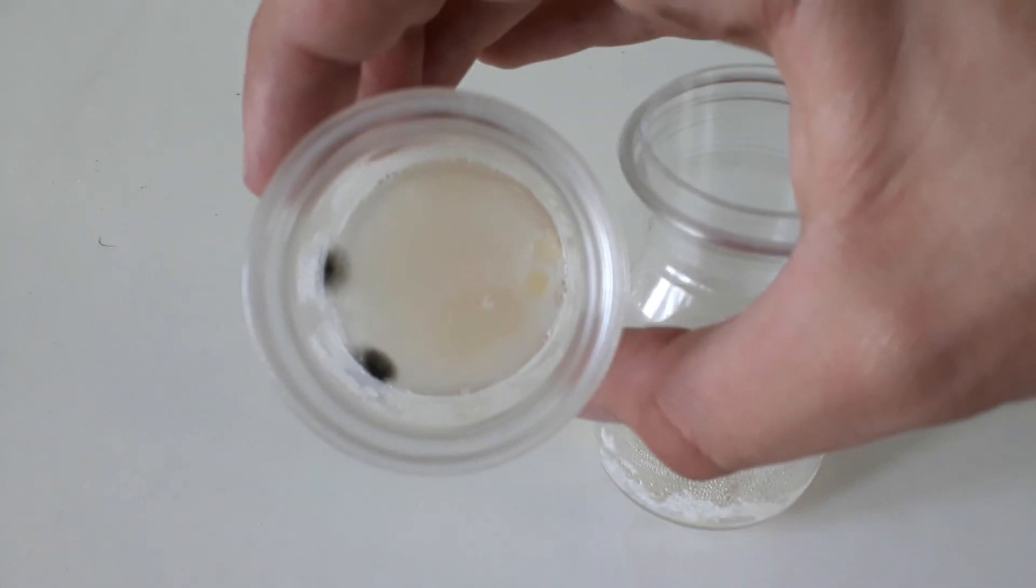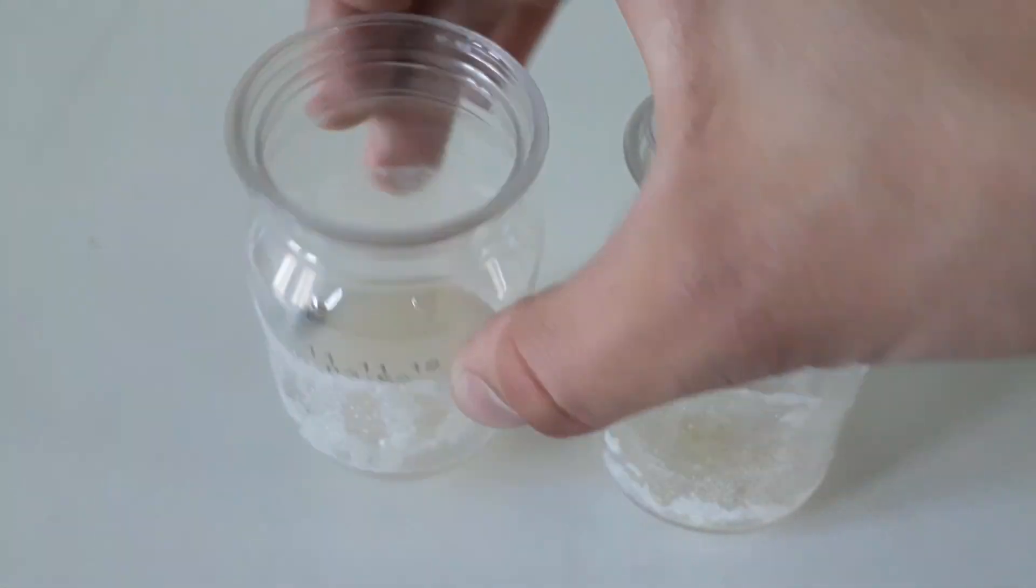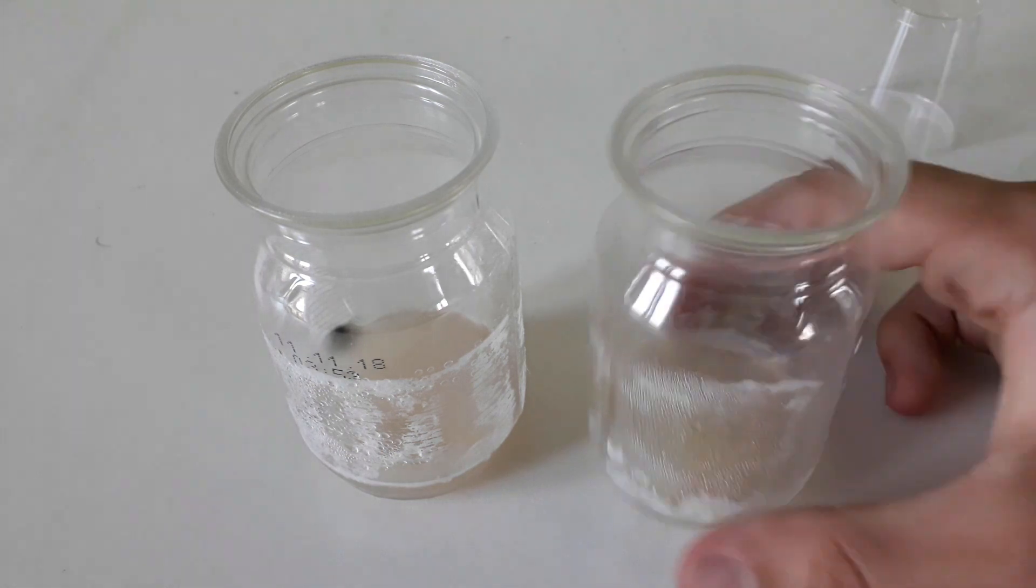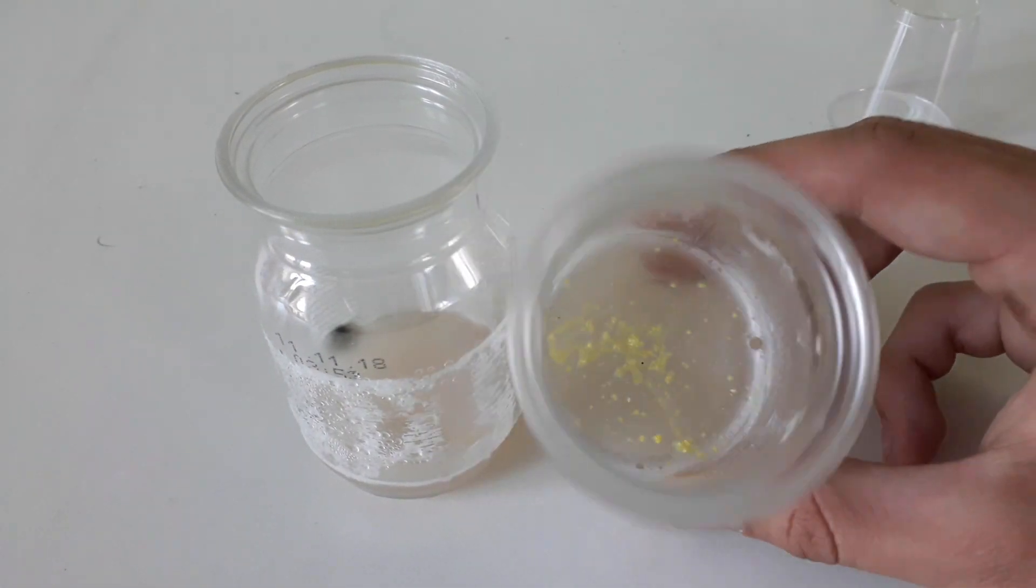And after two weeks, this is what it looked like. The cup on the left clearly has stuff growing in it, whereas the cup with the iodoform in it is completely free from fungal or bacterial growth.